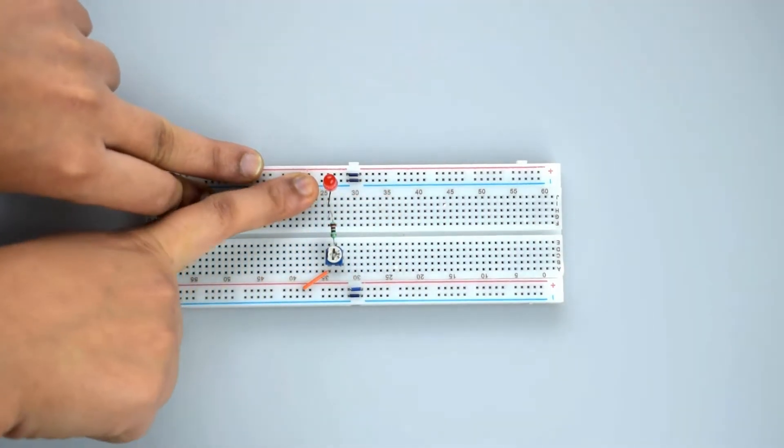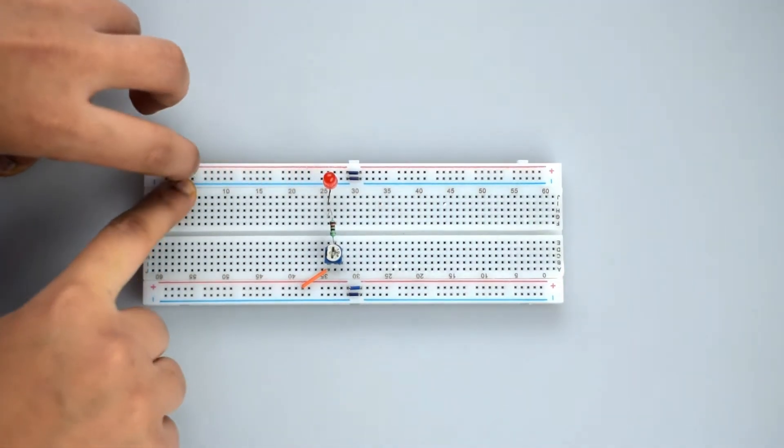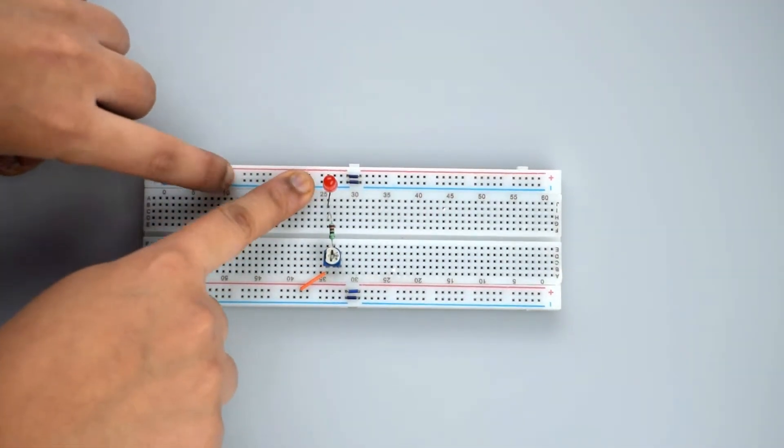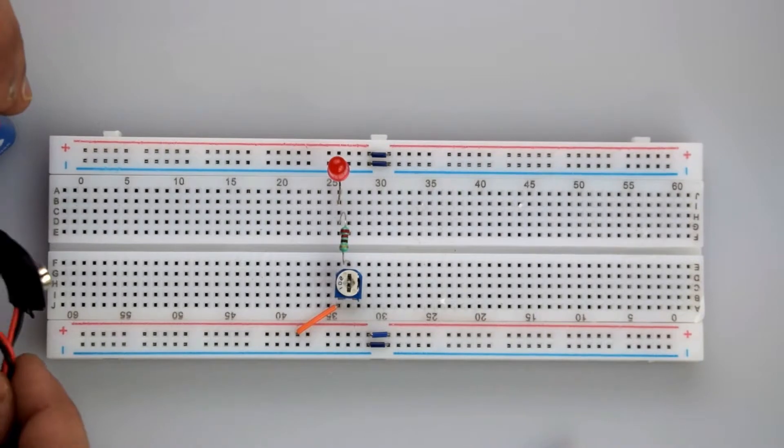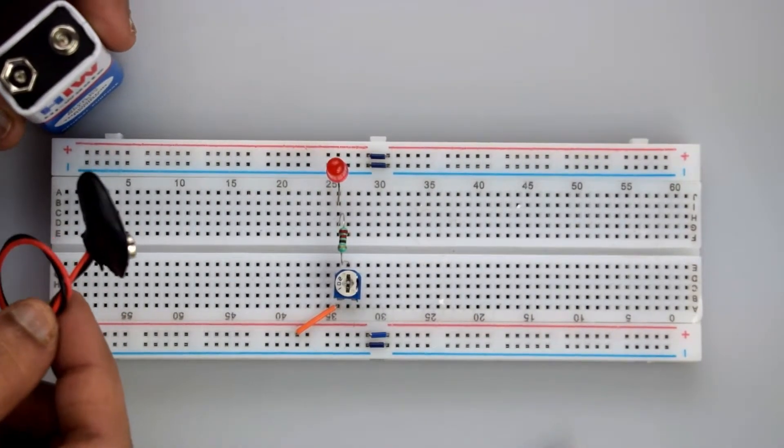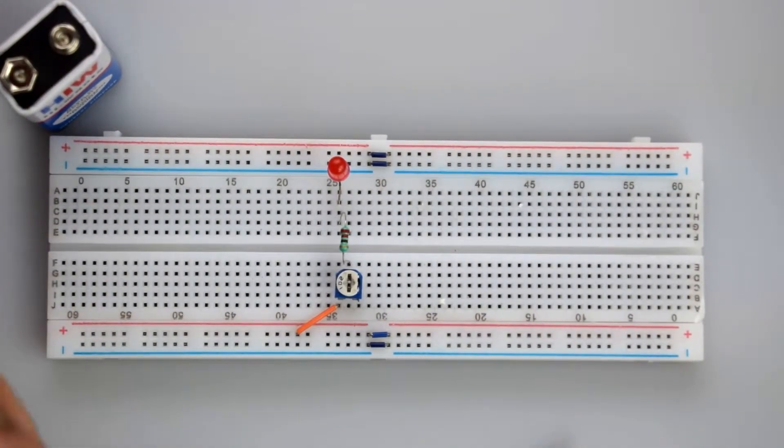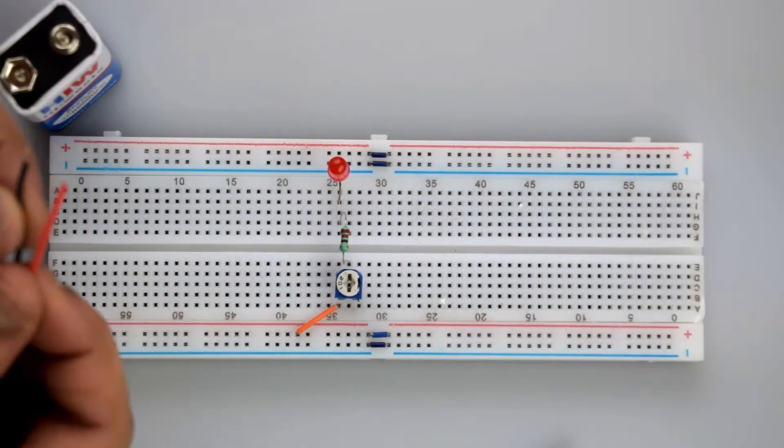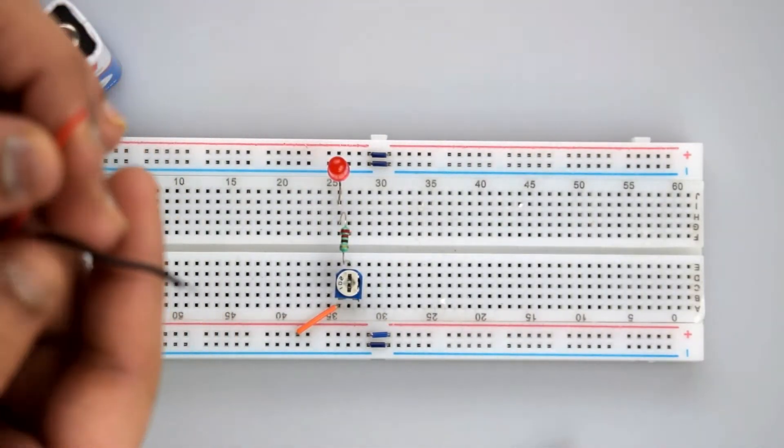And the negative terminal of the LED must be connected to the negative rail of the breadboard. Now attach the battery to the breadboard to provide power supply. The red wire, that is the positive wire of the battery snapper, is connected to the positive rail on the breadboard.